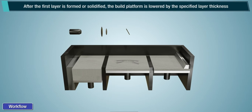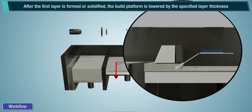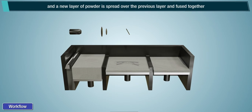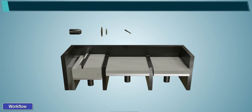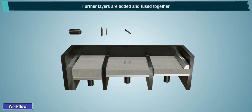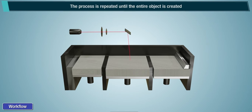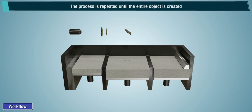After the first layer is formed and solidified, the build platform is lowered by the specified layer thickness. A new layer of powder is then spread over the previous layer and fused together. Further layers are added and fused, and the process is repeated until the entire object is created.